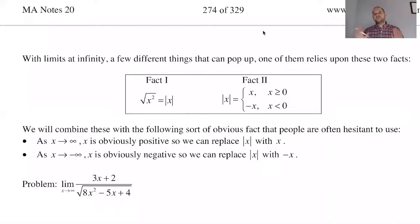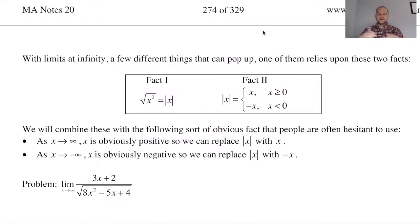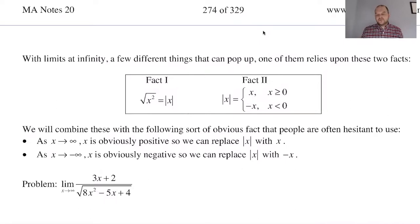We're on page 275, still talking about limits at infinity. Limits at infinity means x is going to infinity, as opposed to limits that become infinity, which typically is x approaching some constant and the function value shoots up or down — vertical asymptotes basically. So limits at infinity, if they are constant and finite, are going to be your horizontal asymptotes. That's why we spend a lot of time on them.